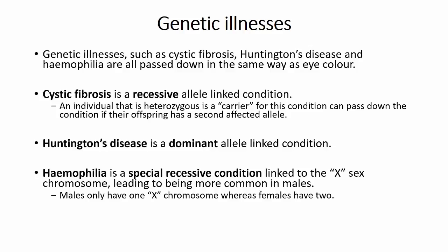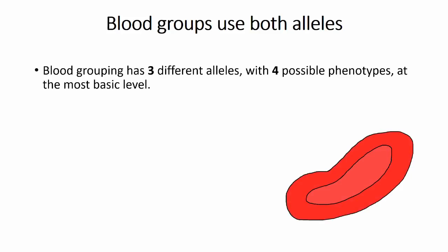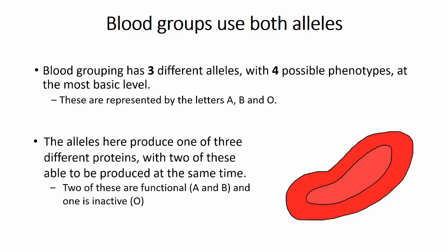This dominance or recessive characteristic doesn't extend to every gene. Some genes that are used a lot use both copies. The ABO blood grouping system is an example of this, where there are three possible genes that can lead to four different blood groups. These genes relate to the proteins on the surface of the body's red blood cells and do not have a dominance or recessive trait. Instead, the two genes are both used, leading to a combined phenotype depending on which alleles an individual possesses.